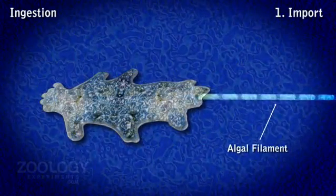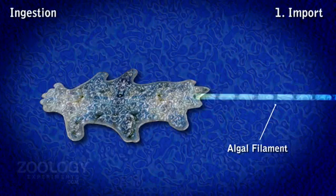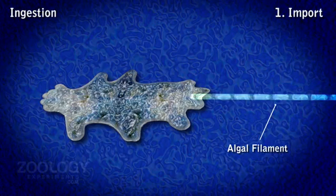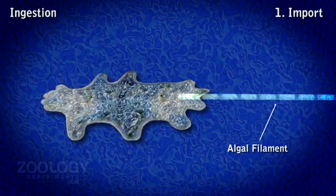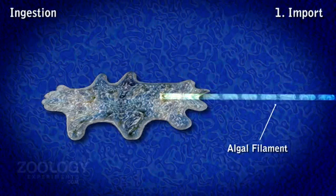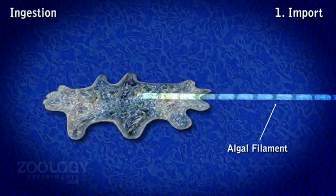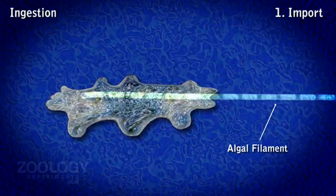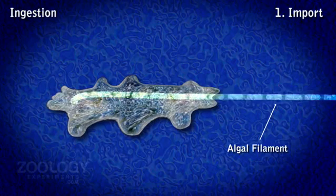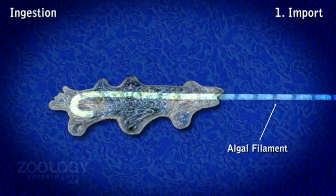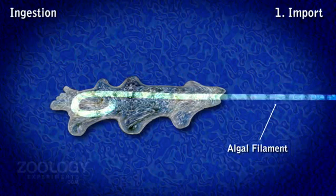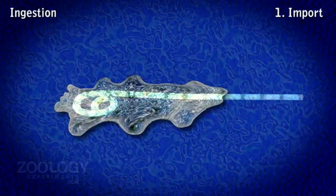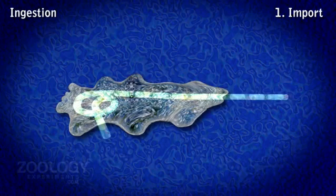1. Import: This method involves the taking in of food such as an algal filament on contact. The food passively sinks into the body by rupturing the plasma lemma and ectoplasm at the point of contact. The ruptured site soon heals up.